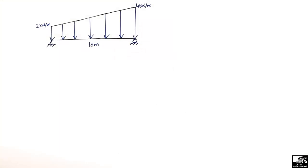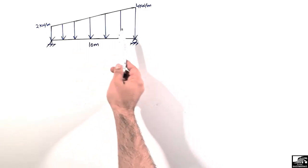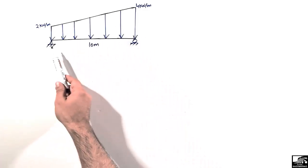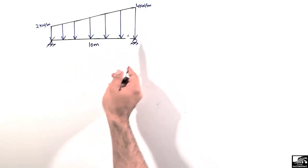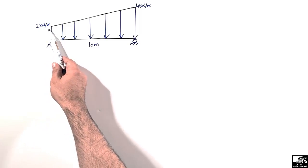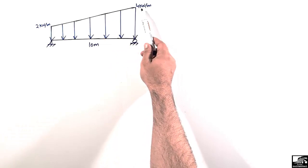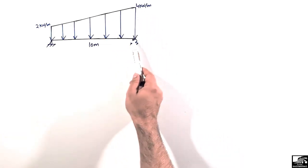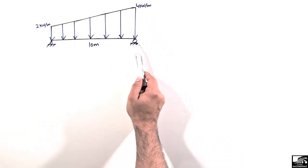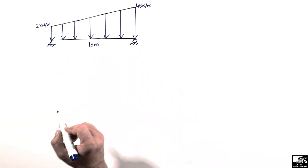Welcome back to 7 Engineering YouTube channel. In today's lecture, we are going to find out the support reactions for a simply supported beam with a trapezoidal load acting on it. The beam has a length of 10 meters. The load starts at 2 kilonewton per meter at the hinge support and increases up to 4 kilonewton per meter at the roller support.